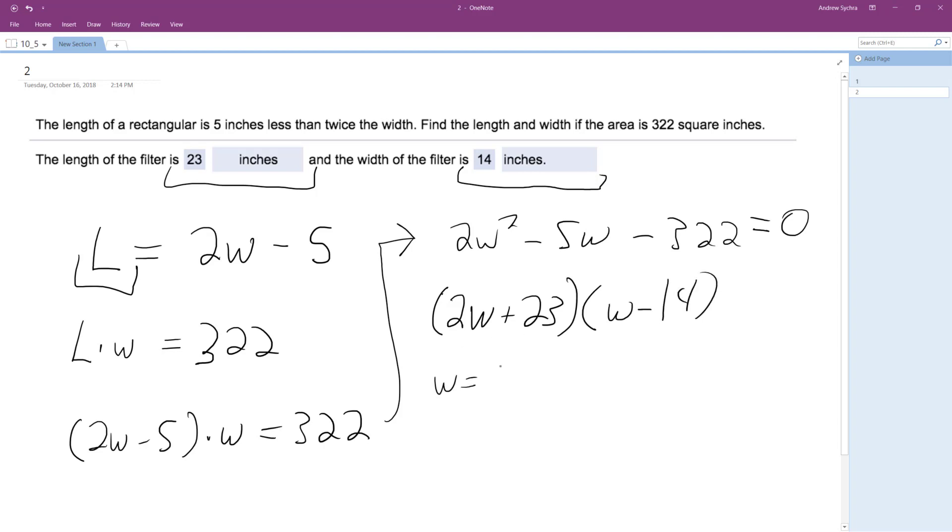And then width is going to be W is equal to negative 23 over 2 or 14. It ends up not being this, it ends up being 14.